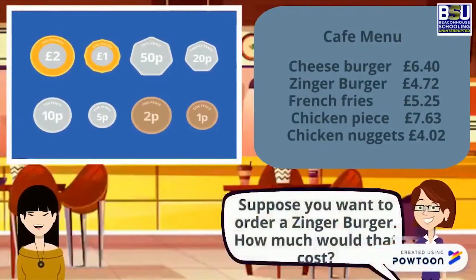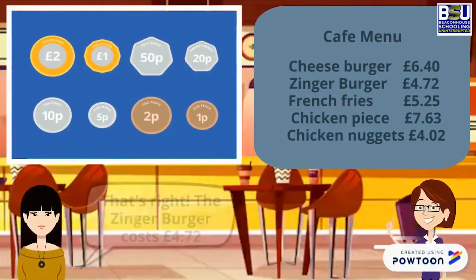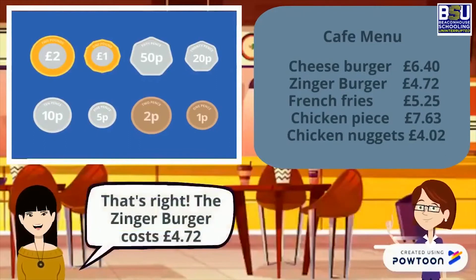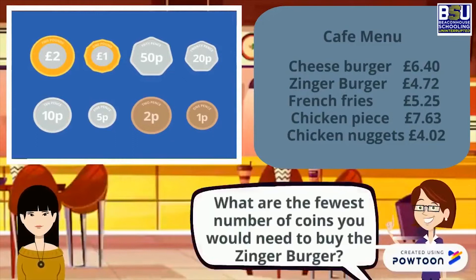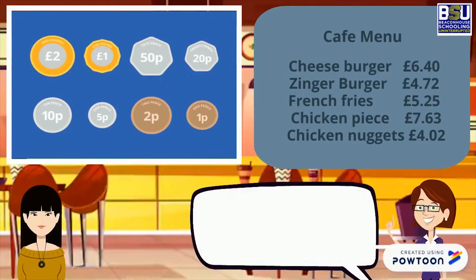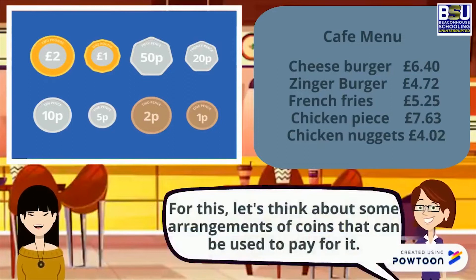That's right, the zinger burger costs 4.72 pounds. What are the fewest number of coins you would need to buy the zinger burger? For this, let's think about some arrangements of coins that can be used to pay for it.